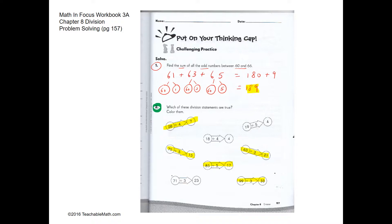For question 2, we have to color the division statements which are true. Some are straightforward division statements we should know, but others need a little more work. Let's look at 75 divided by 5. We can decompose 75 into 50 and 25. We chose 50 because it is easily divisible by 5. So 50 divided by 5 is 10, and 25 divided by 5 is 5, giving an answer of 15. So that one is correct.